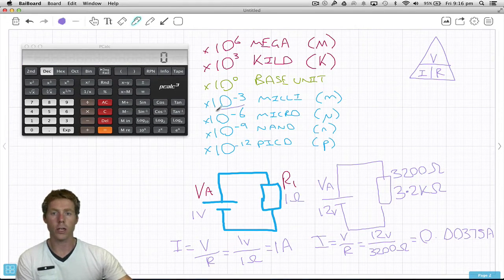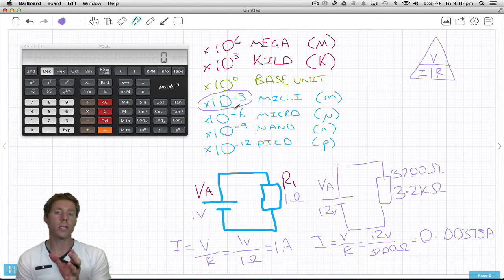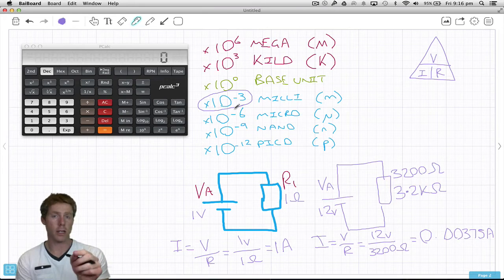That negative 3 actually lines up with this. It's actually meaning 3.75 times 10 to the negative 3.